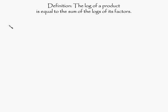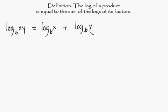So what that means is this. Log base b of xy, and this here is a product because it consists of two factors. The log of this product is equal to the sum of the logs of its factors, so the log of this factor and the log of this factor. So this can be written like this: log base b of x plus log base b of y.